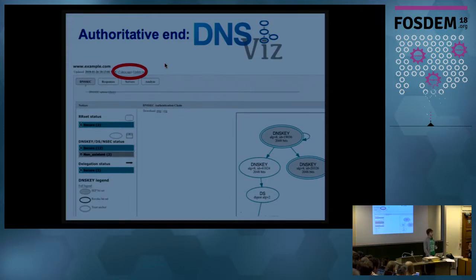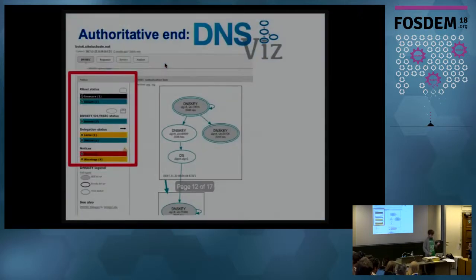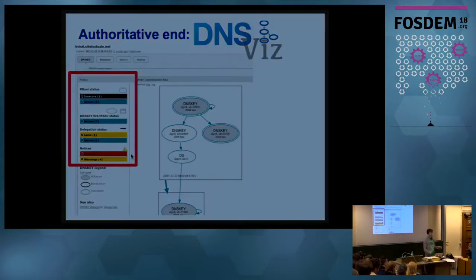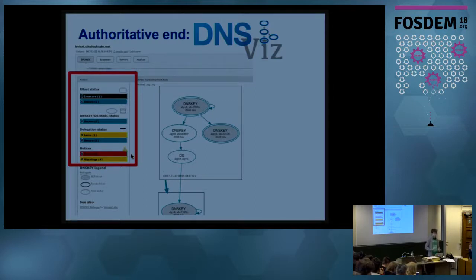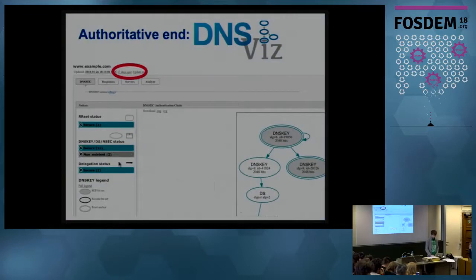Now let's assume we have a fresh result from DNS Swiss. The important part of the page is called Notices. If you can see a lot of red and yellow signs, then there is a problem on the far end, most likely. In that case, it's a good idea to pick up the phone and call the domain owner and say, 'Hey, your site is broken, do something about it.' Often it means the problem is not local and you are not going to fix it because you have no means to do that.